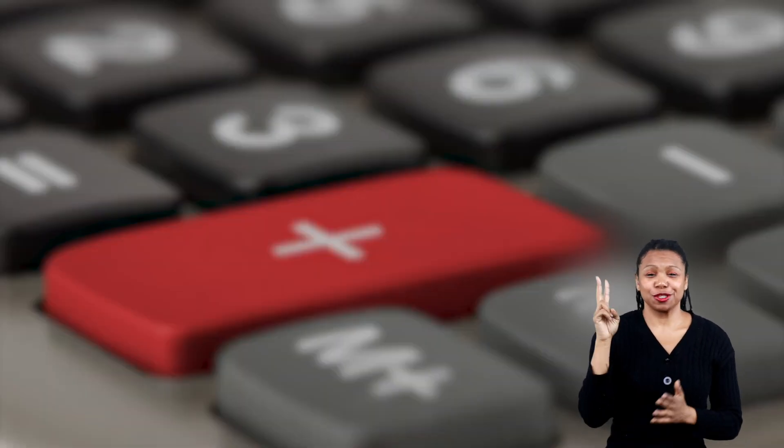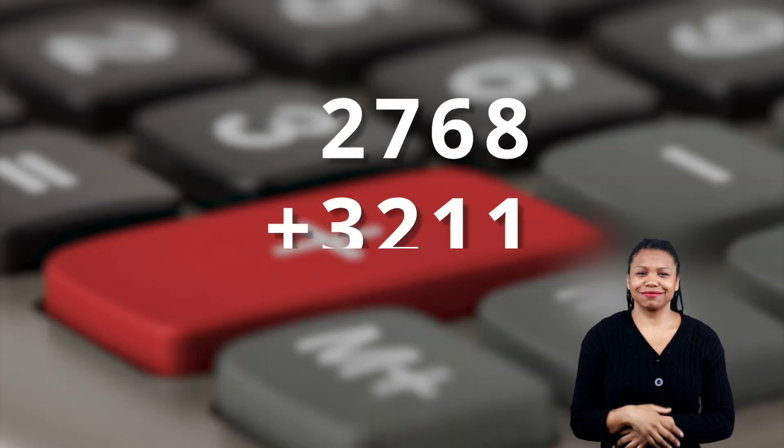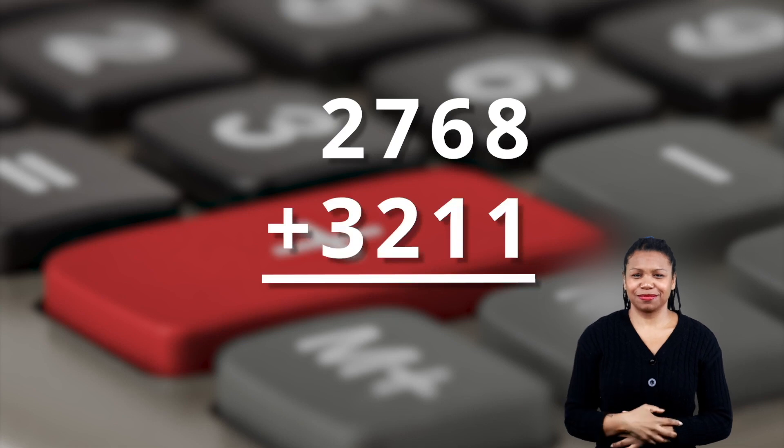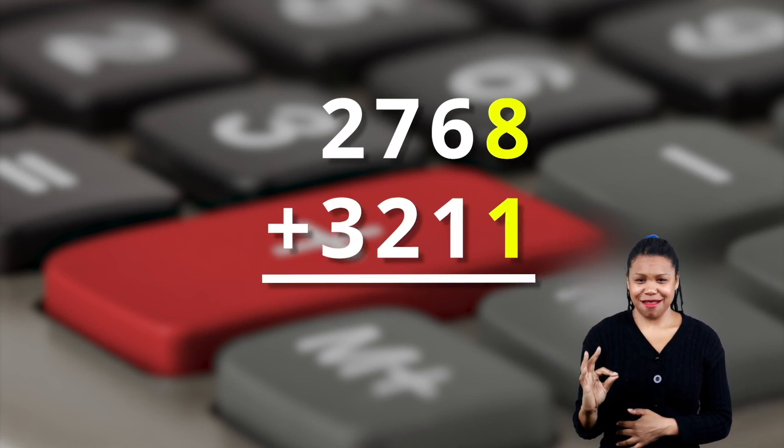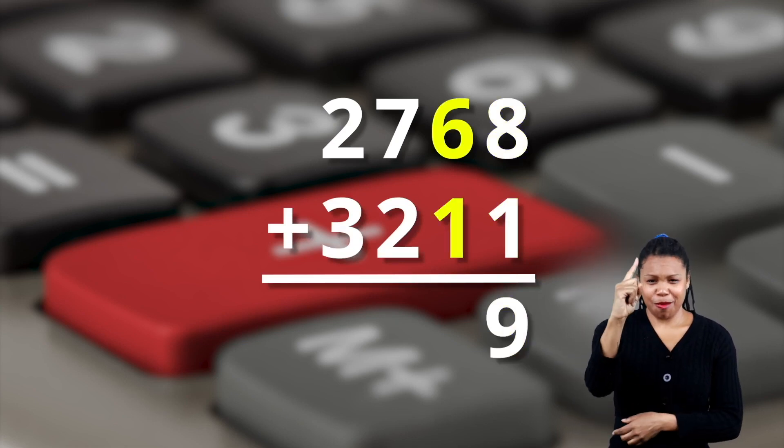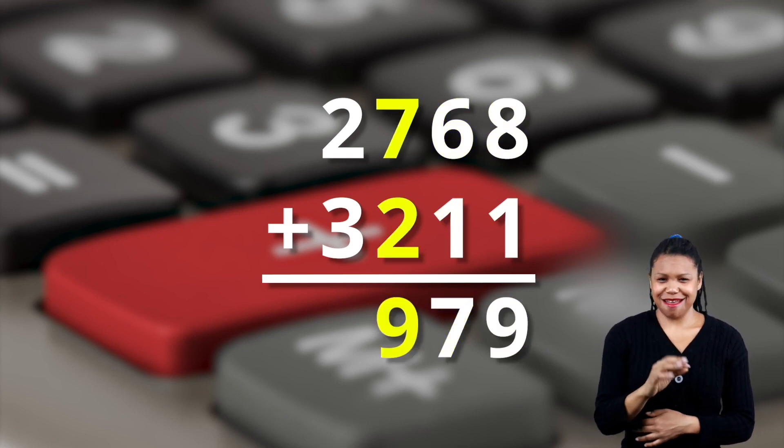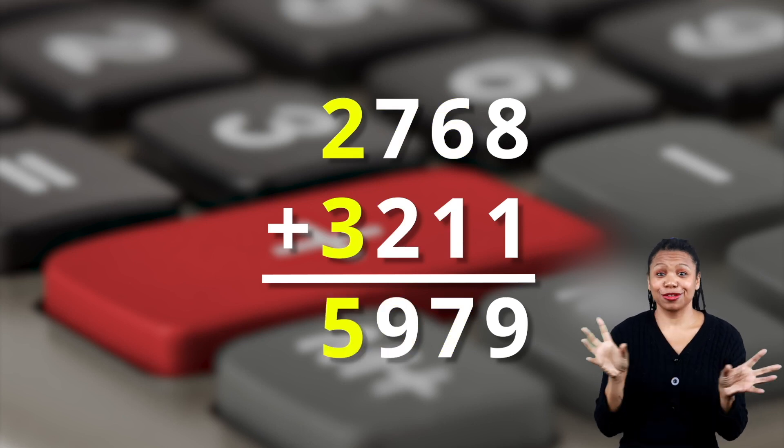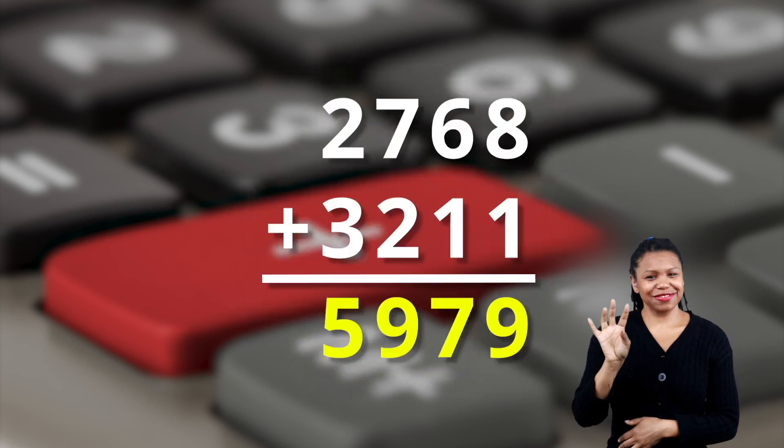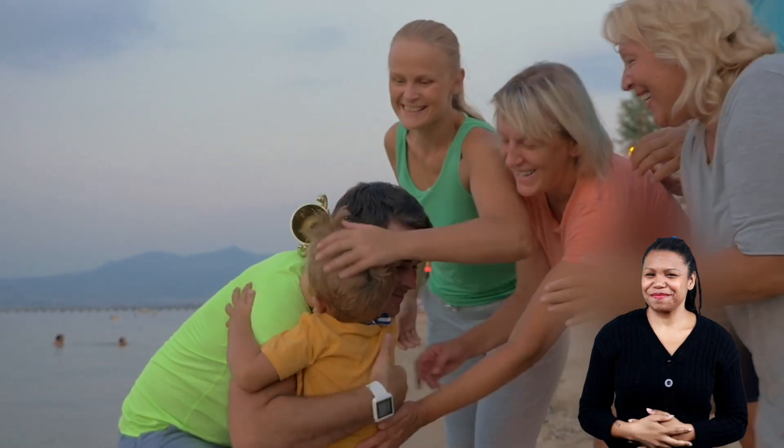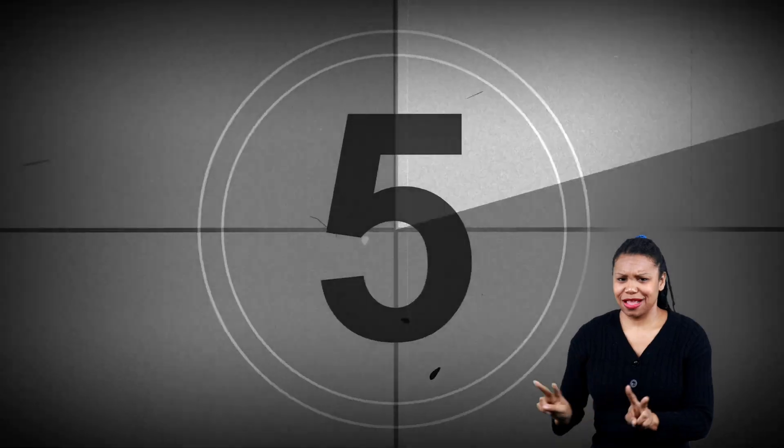Last one. Two thousand seven hundred sixty-eight plus three thousand two hundred and eleven. Eight plus one is nine. Six plus one is seven. Seven plus two is nine. And two plus three is five. Five thousand nine hundred seventy-nine. Well done! Notice how all the sums in each place value column equal less than ten. So we don't need to regroup.